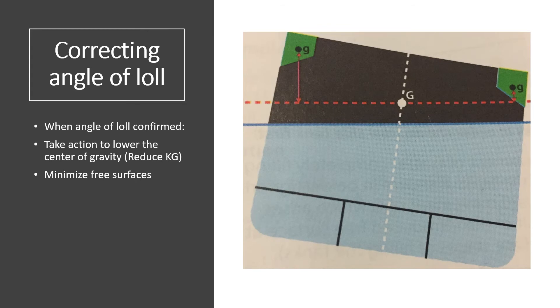If the angle of loll situation is confirmed, your priority should be to lower the center of gravity. Remember, the more you lower the center of gravity, the more the distance it makes from the point of metacenter, and higher is the metacenter above the center of gravity, higher becomes the GM. Metacenter should not be below G; metacenter should always be above G for a positive GM.